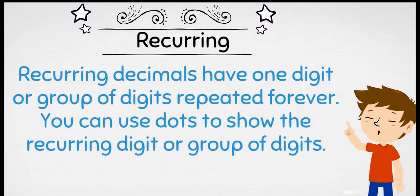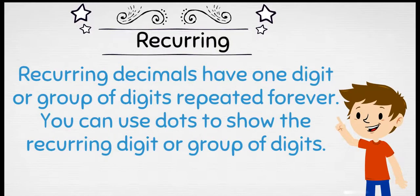Recurring decimals have one digit or group of digits repeated forever. You can use dots to show the recurring digit or group of digits.